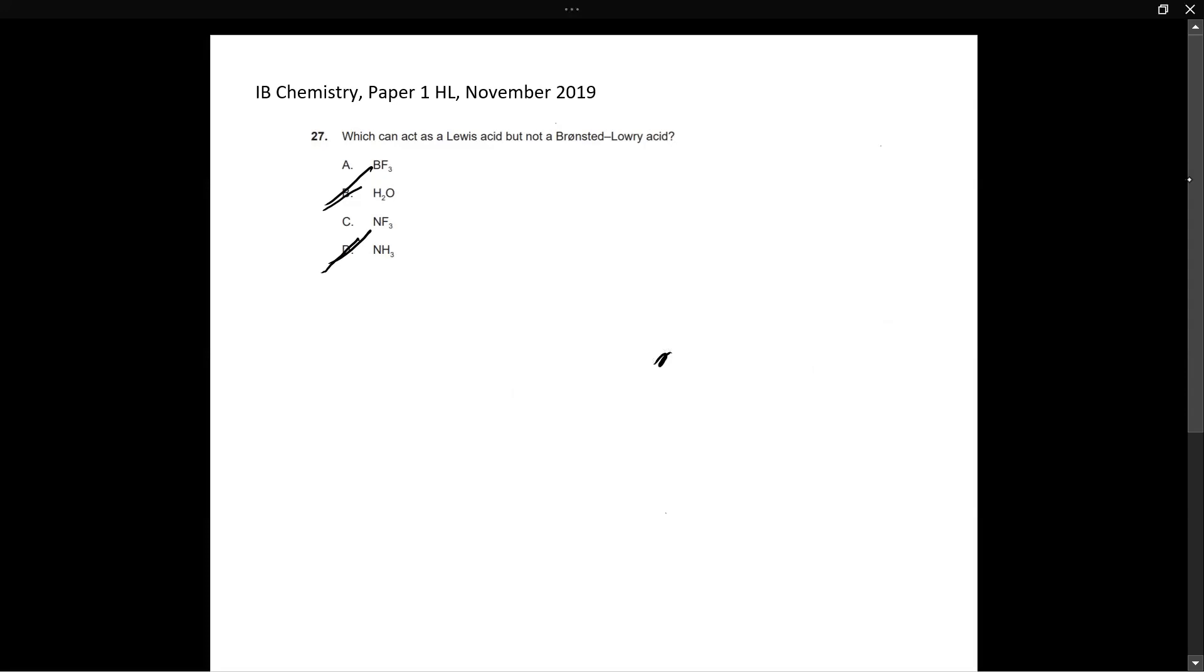Now we're left between two options, A and C. Now, both of these look convincing, right? They obviously cannot act as a Bronsted Lowry acid because they don't even have hydrogens. So if they don't have hydrogens, how can they donate it? But can both of them really accept a pair of electrons? Because that's the first condition. They should be able to act as a Lewis acid and Lewis acid accepts pair of electrons. So can both of them accept a pair of electrons? Let's see, can NF3 accept a pair of electrons? So let's just draw the Lewis structure.